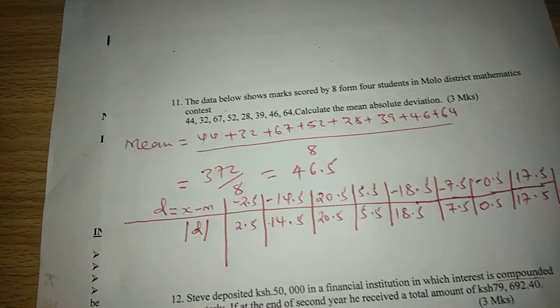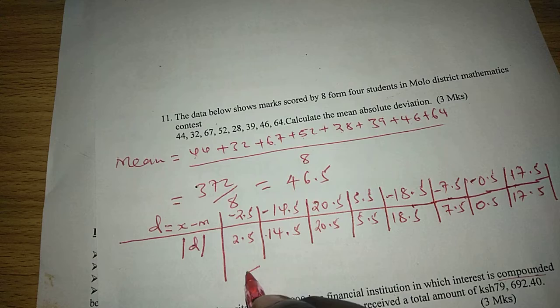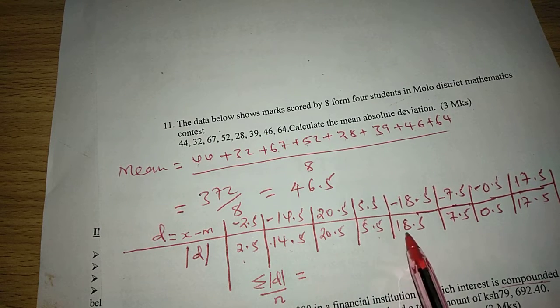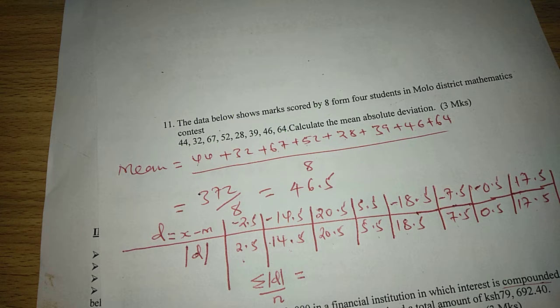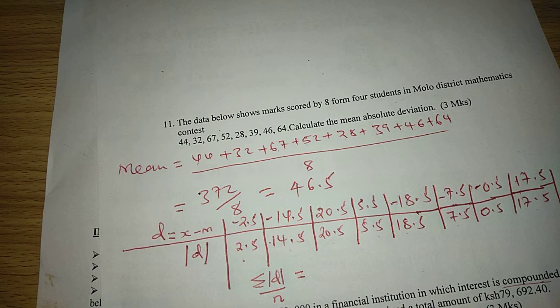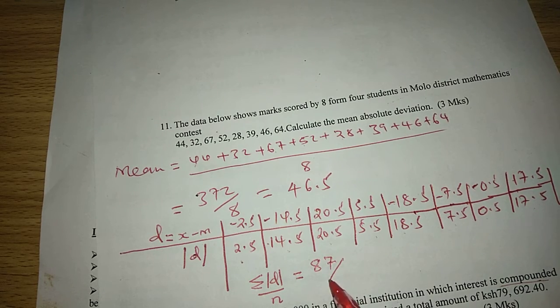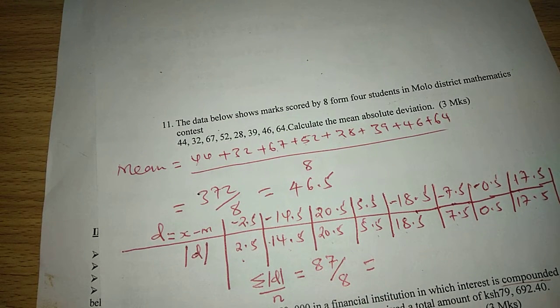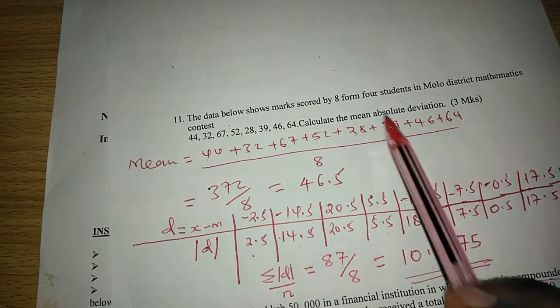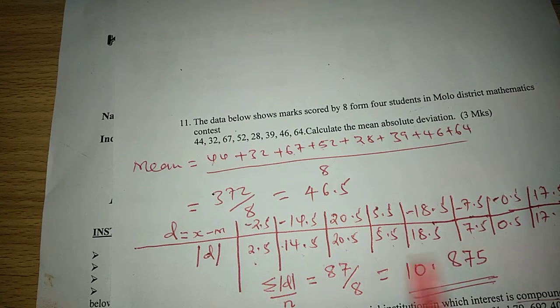So these are the absolute deviations. We can get their mean now, the mean of absolute deviation. So the absolute deviations are there and we divide with the total number, eight absolute deviations: 2.5 plus 14.5 plus 20.5 plus 5.5 plus 18.5 plus 7.5 plus 0.5 plus 17.5. This gives us 87 divided by 8, which equals 10.875.